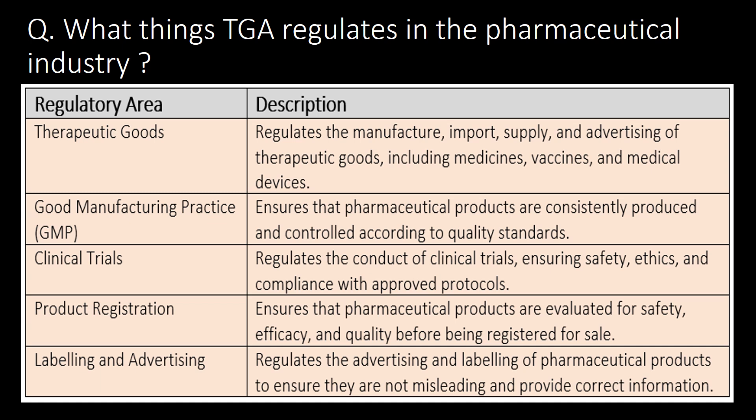Which things does TGA regulate in the pharmaceutical industry? Therapeutic goods, Good Manufacturing Practices — that is GMP — clinical trials, product registration, and labeling and advertising are regulated by TGA in the pharma industry.